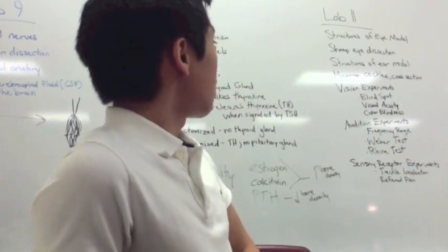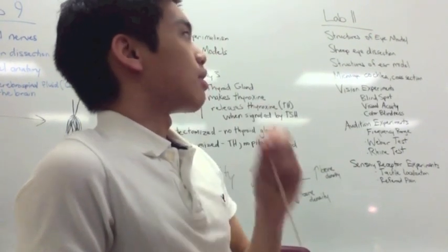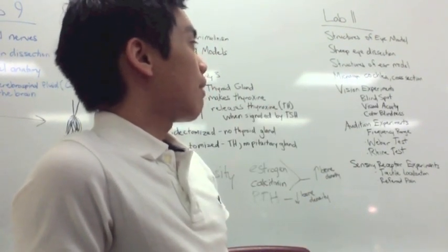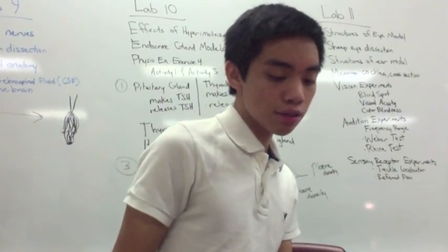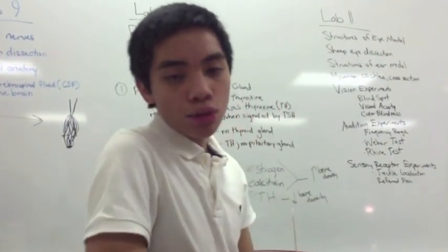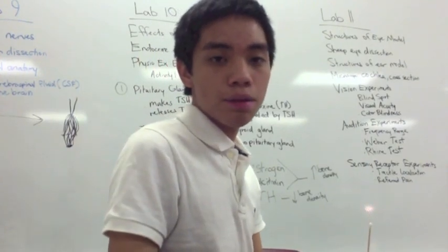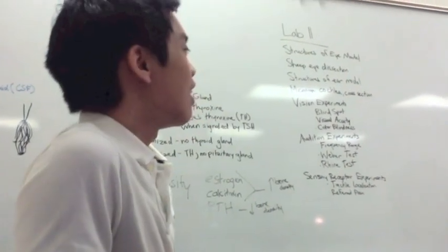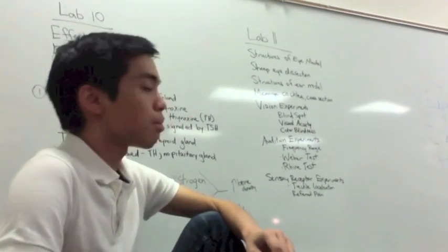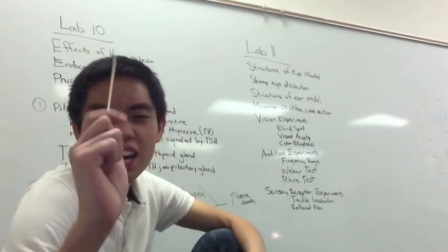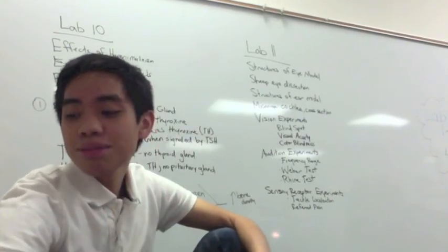We have the different experiments that we did — the vision experiments. We did three: the blind spot, the visual acuity, and color blindness. Do you know where your blind spot is located? It's located in your optic disc.